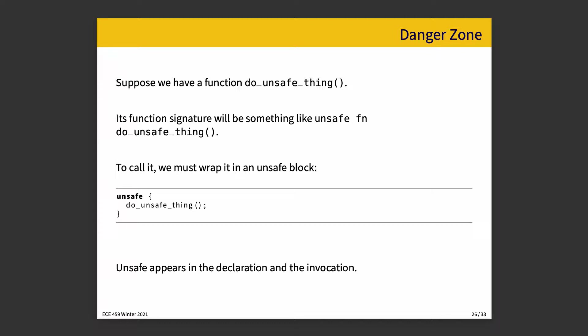If you try to use an unsafe function without it being inside an unsafe block, the compiler will say no, as it should. You can just smash the unsafe block around it — say `unsafe { do_unsafe_thing(); }` — and that is enough to make the compiler quiet, but not sufficient to make a thorough code reviewer comfortable.